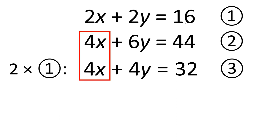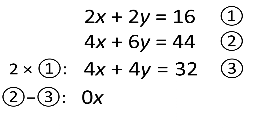Now we can take equation 2 and subtract equation 3, because we've managed to get the x's to be the same. We've got 4x in both of these. So equation 2 subtract equation 3: 4x take away 4x is 0x, 6y take away 4y is 2y, and 44 take away 32 is 12. If we work that out, we get y equals 6.